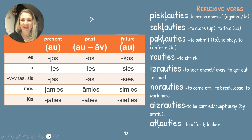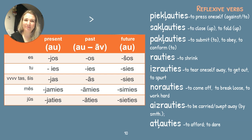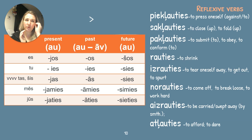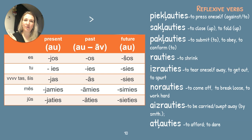Pieklauties means to press oneself against something — it could be a person, a tree, the ground, anything you can think of. Saklauties: for this verb we need at least two people or things together — to close up, to fold up. If it's one person: es saklaujos followed by ar; for plural forms mēs saklau-jamies, jūs saklau-jaties, viņi saklaujas — no need for ar in plural.